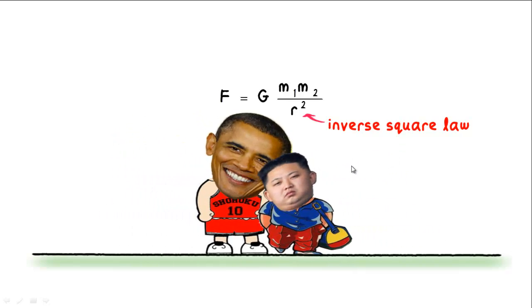Doesn't that mean that the separation between them is zero? And any number divided by zero is a huge number. That would mean that it is now impossible to pull these two persons apart since the force of attraction between them is infinite.